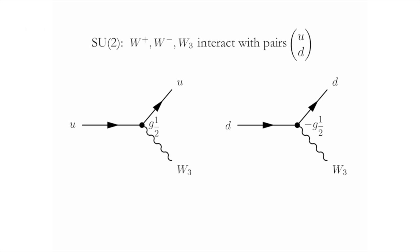One very peculiar thing about nature is that the SU2 interaction only operates on the left-handed component of a fermion. So in these diagrams, it's only the left-handed component of the up and down quark which interacts with W3.